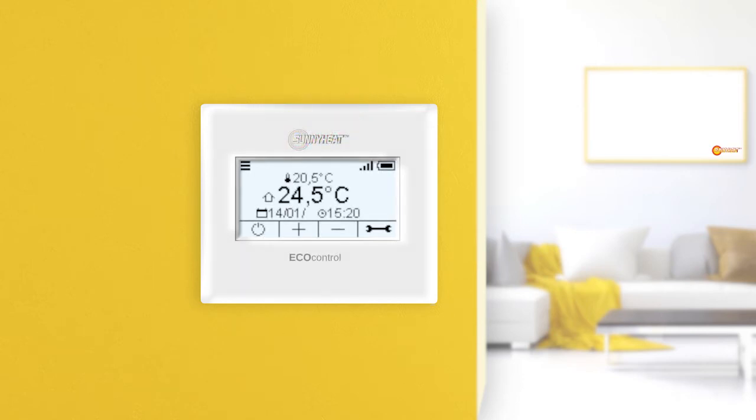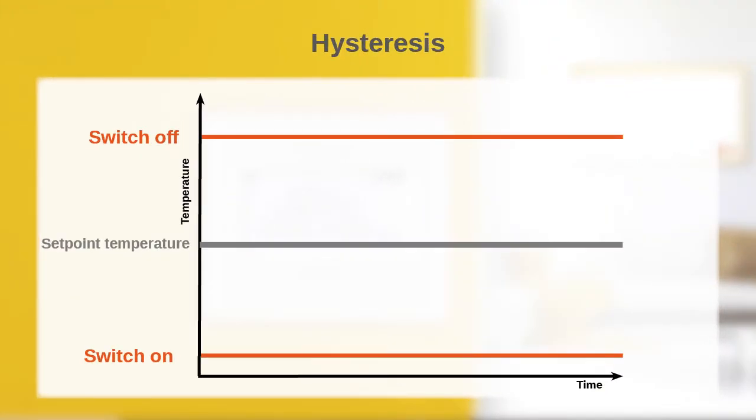Most thermostats work with a hysteresis to control the room temperature. Let's assume that the hysteresis is half a degree Celsius. This means that the heating heats until the room temperature is half a degree Celsius above the setpoint temperature. Then the heating switches off,